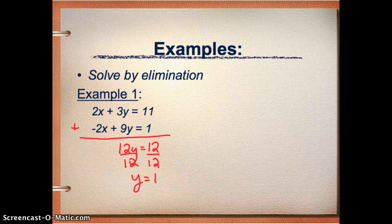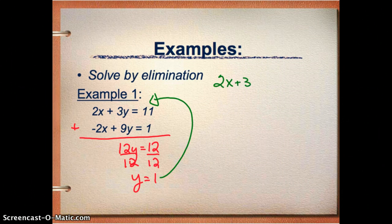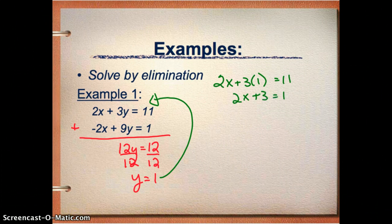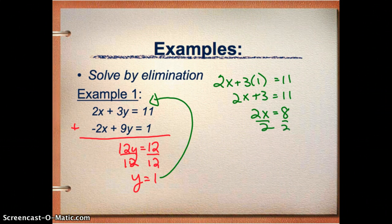Now I need to go to either of the original two equations and solve for my other variable x. So I'm going to just choose the first one. So I've got 2x plus 3 times y, and I think y is 1, should equal 11. So 2x plus 3 equals 11. Subtract 3 from both sides, and I get 2x equals 8. Divide by 2. And I get x equals 4.